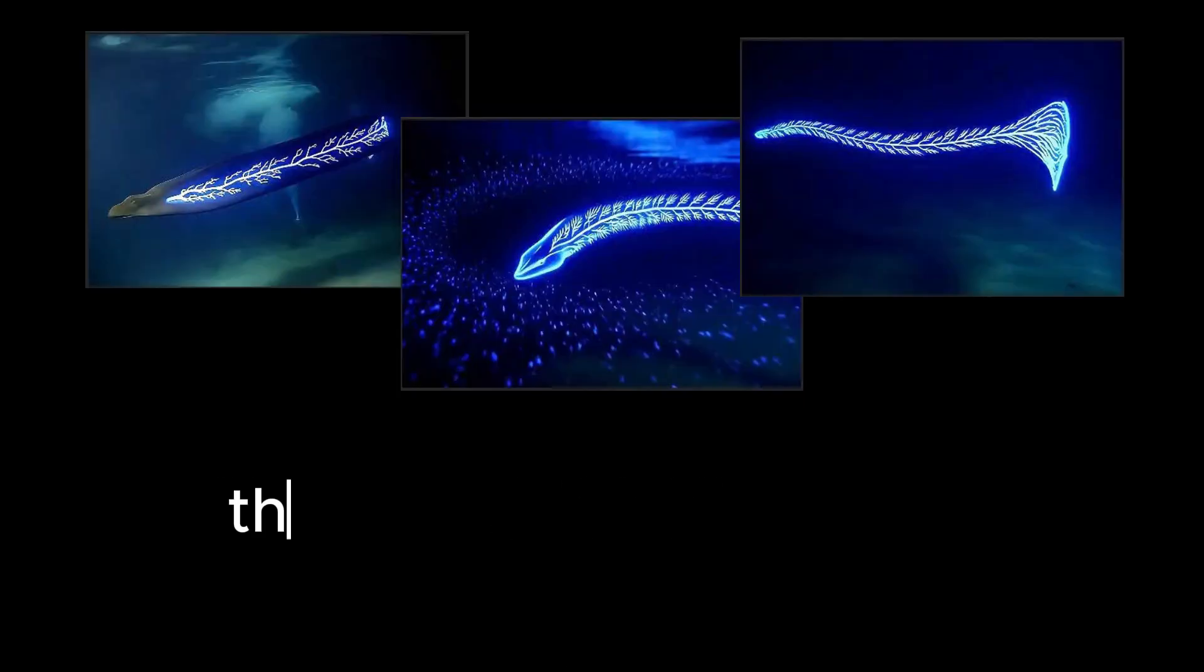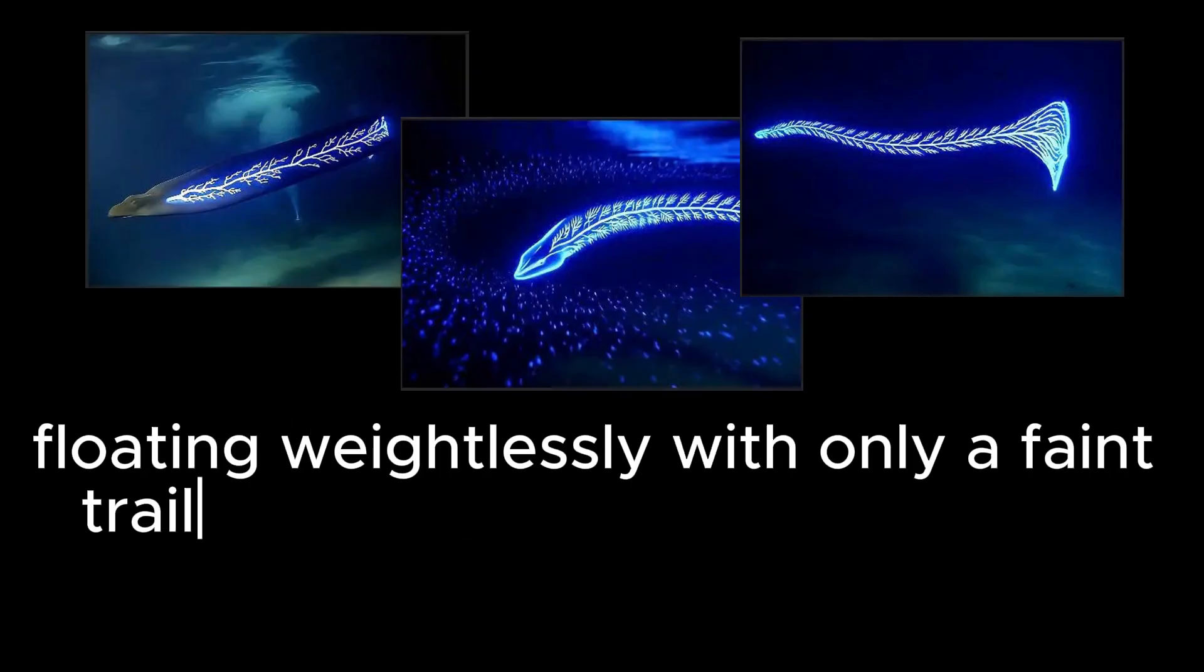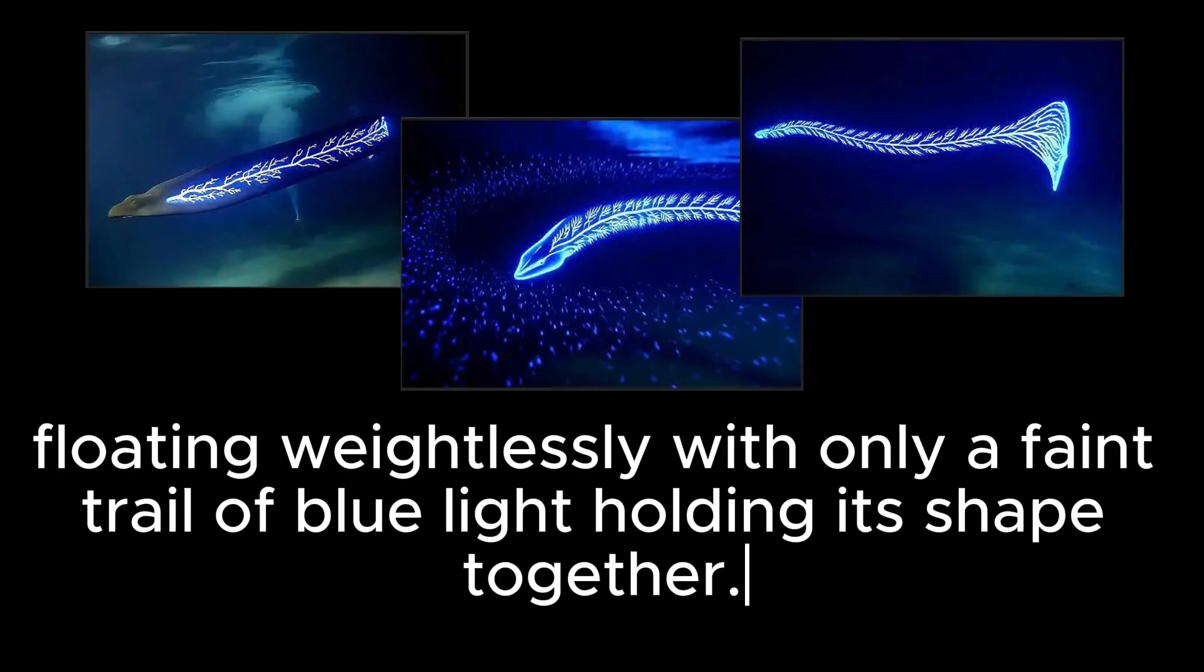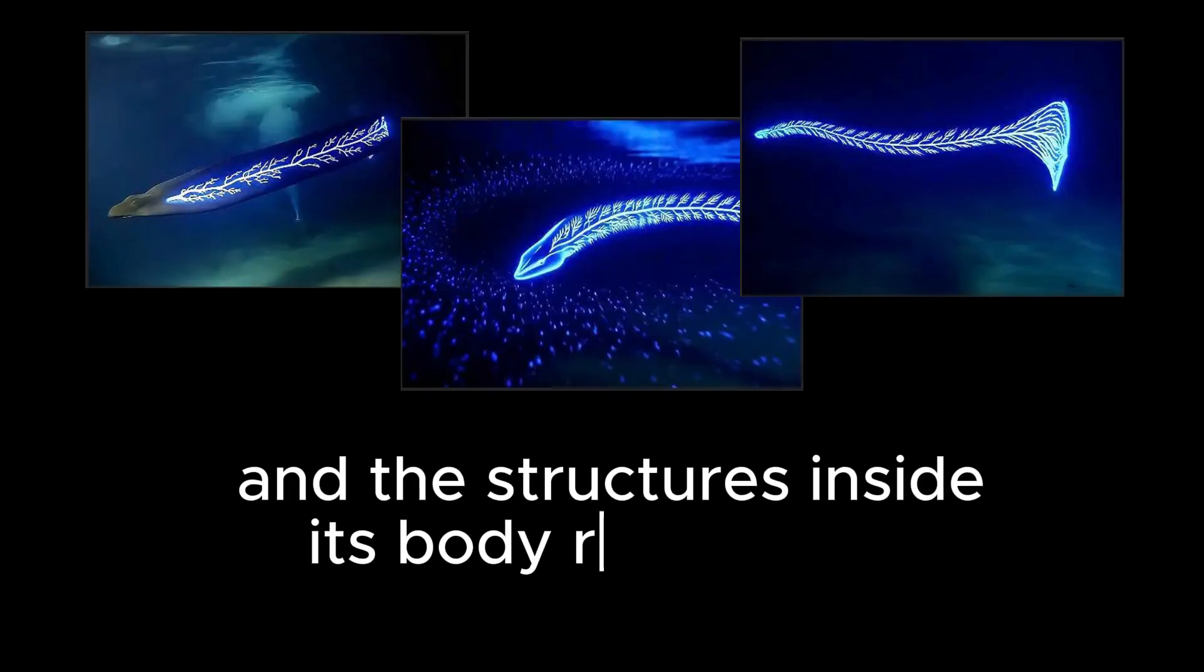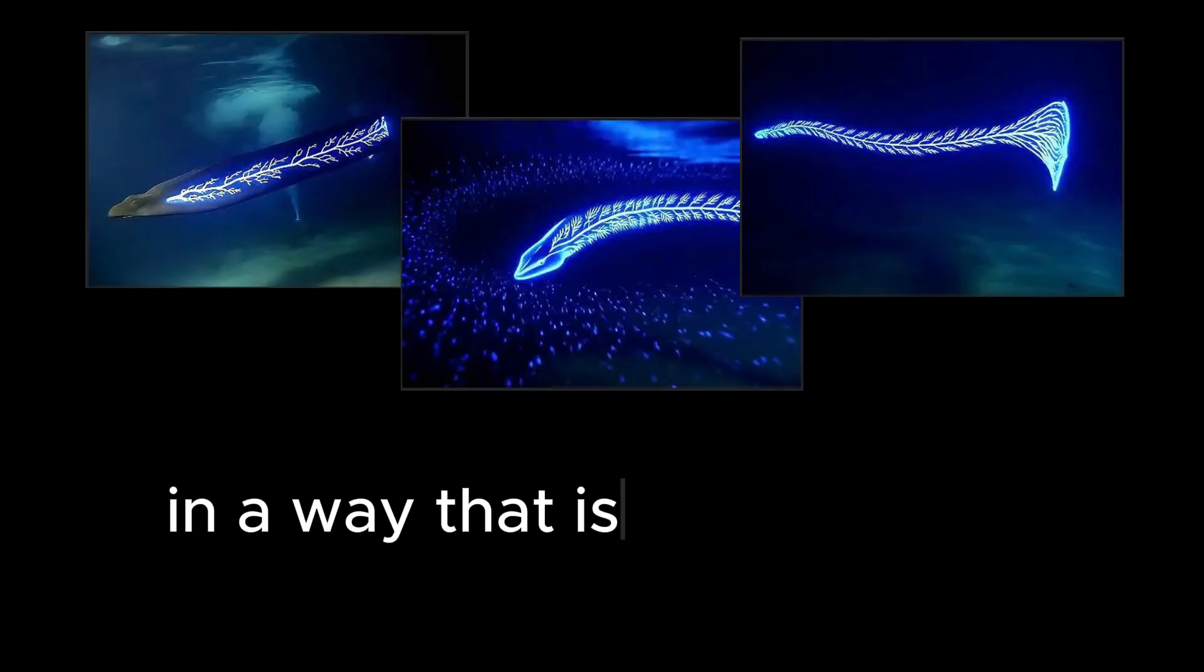At first, the creature appears thin, elongated, floating weightlessly with only a faint trail of blue light holding its shape together. But moments later, its entire form swells outward, the tail retracts, and the structures inside its body reorganize in a way that is unmistakable.